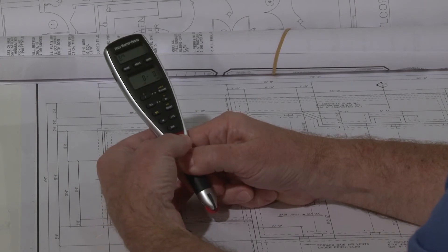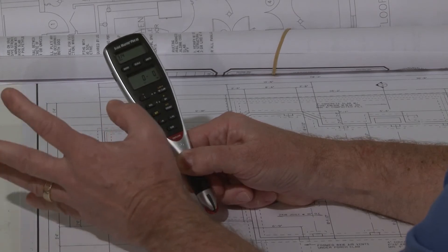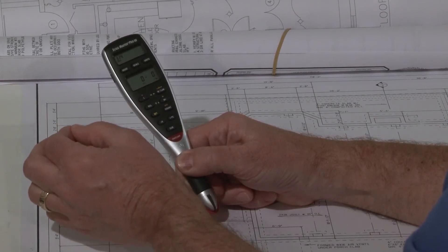The memory key will allow you to store linear values, area values, or cubic values. Individually you can't mix and match them of course.